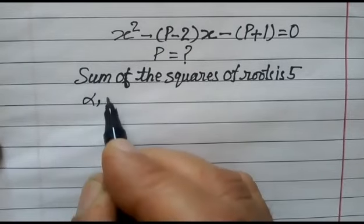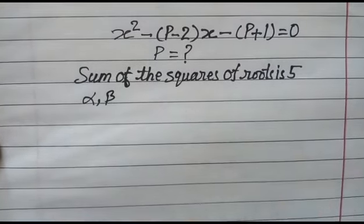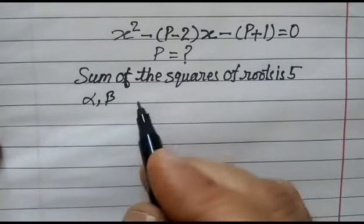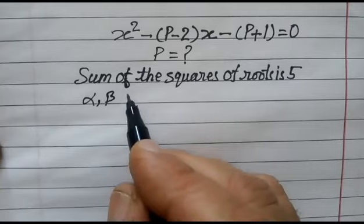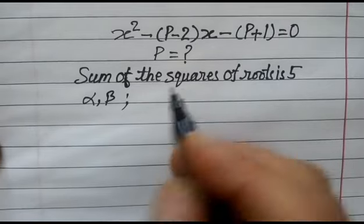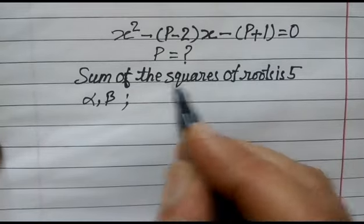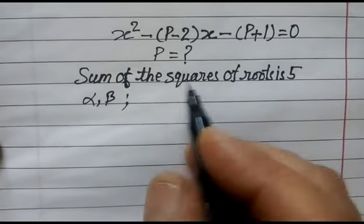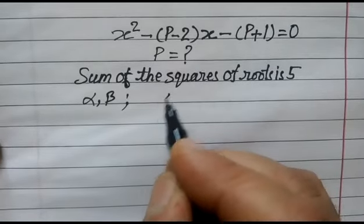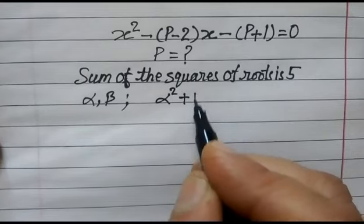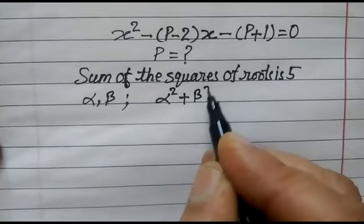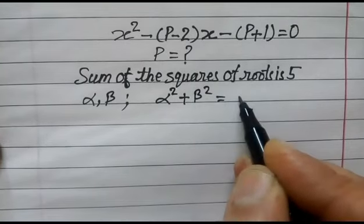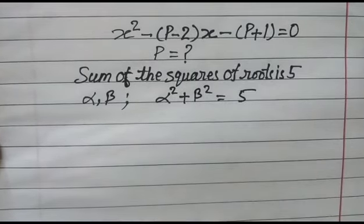Let alpha and beta be the roots of the equation. According to the given condition, alpha² + beta² = 5.